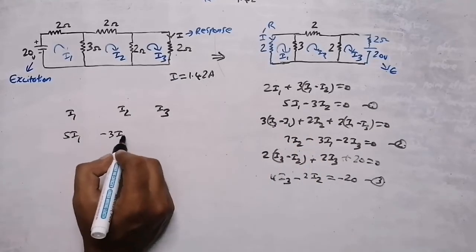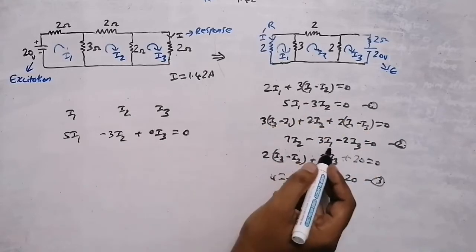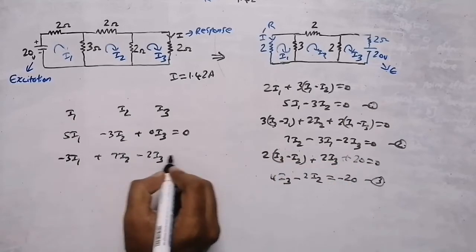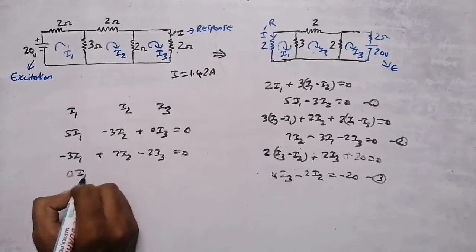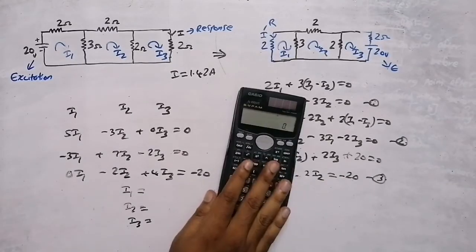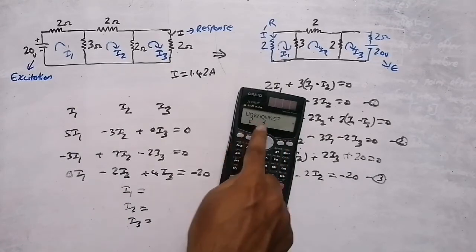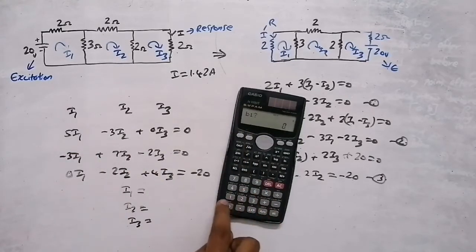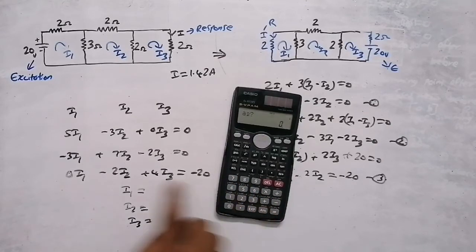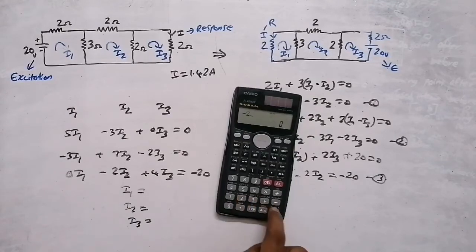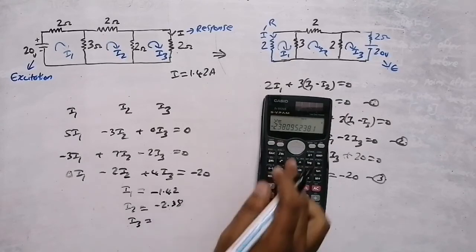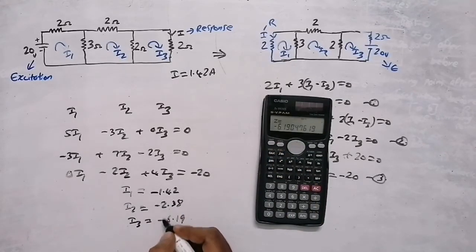Rewriting in order of i1, i2, i3: First equation: 5i1 − 3i2 + 0i3 = 0. Second equation: −3i1 + 7i2 − 2i3 = 0. Third equation: 0i1 − 2i2 + 4i3 = −20. Solving in the calculator gives i1 = −1.42, i2 = −2.38, i3 = −6.19. All values are negative, so the direction of current is opposite to the assumed direction.